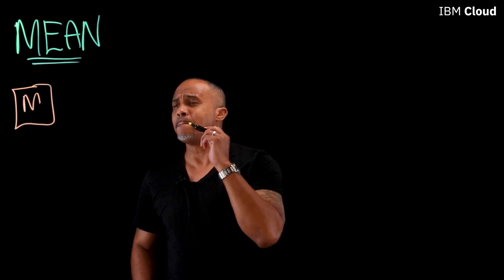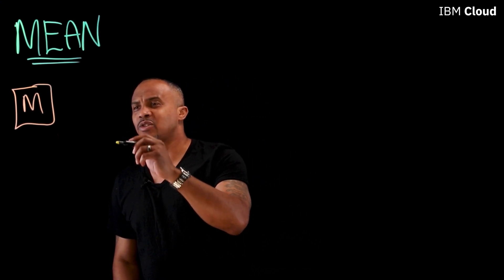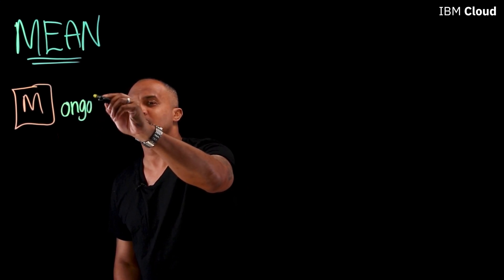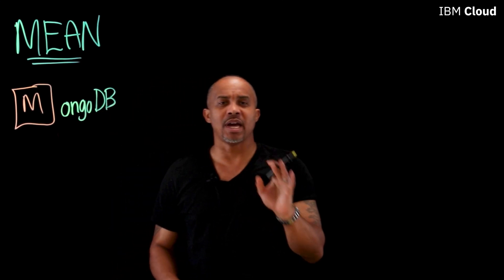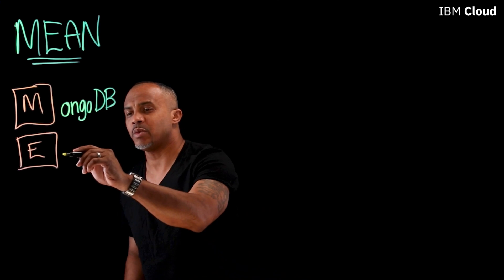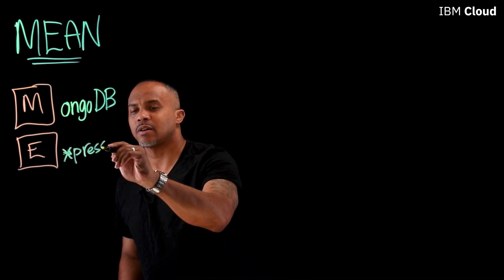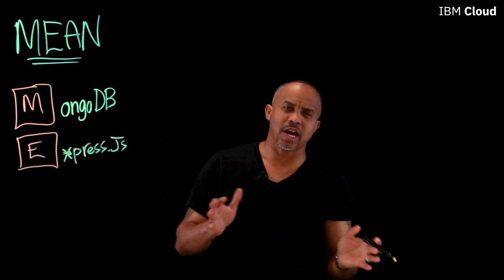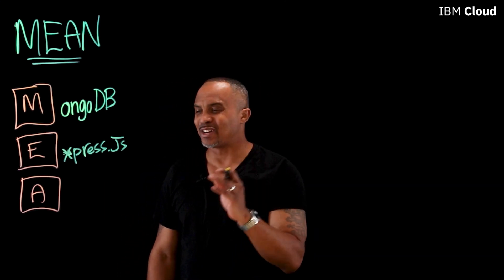We have the MEAN — the M, of course, which is going to stand for MongoDB, talking about the main data store as a component of that. We have the E, which stands for Express. Express.js — we all know it's a web application framework built on top of JavaScript.